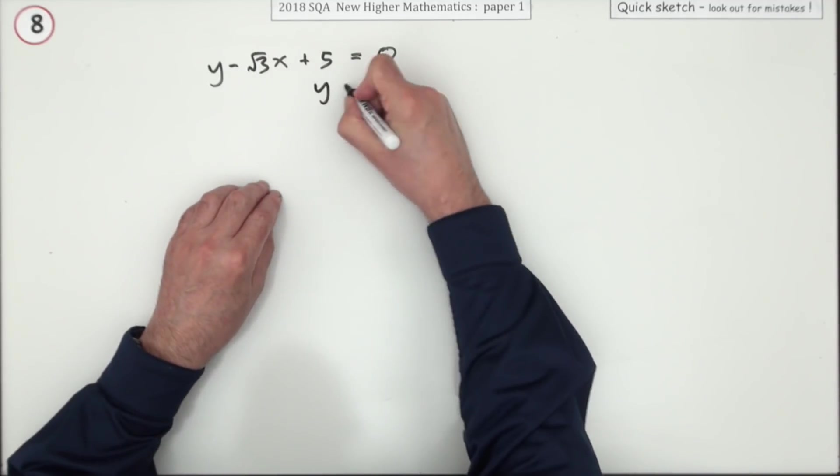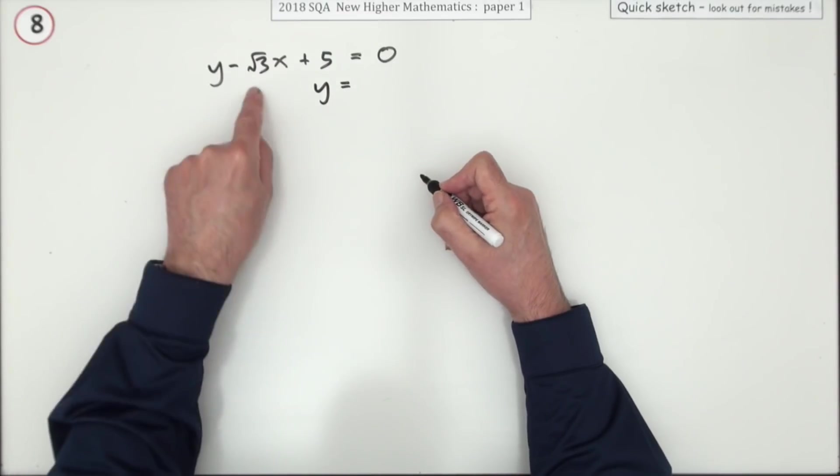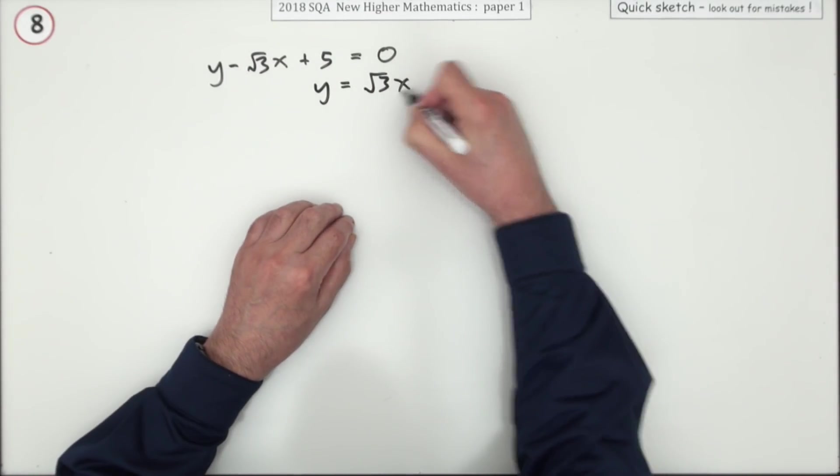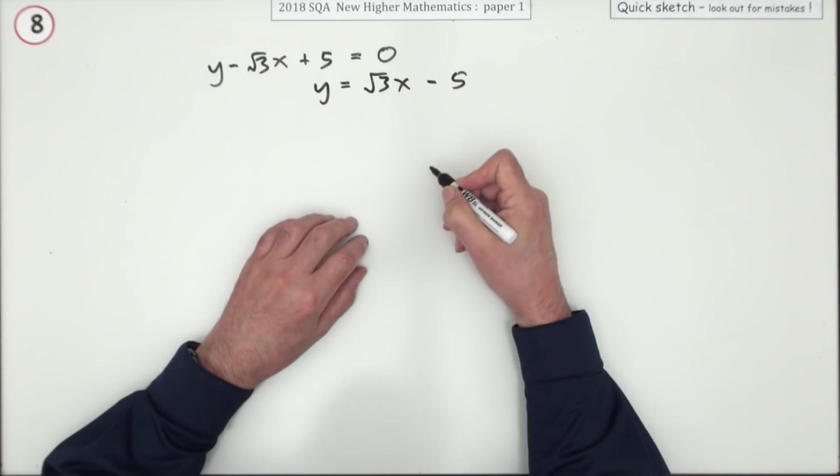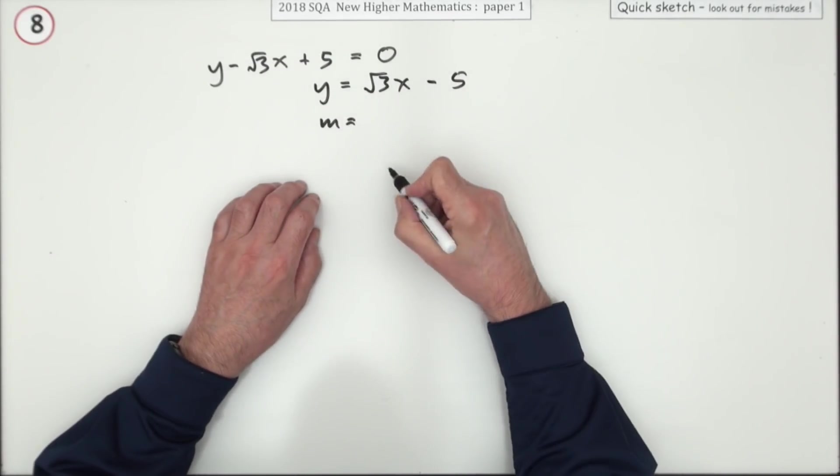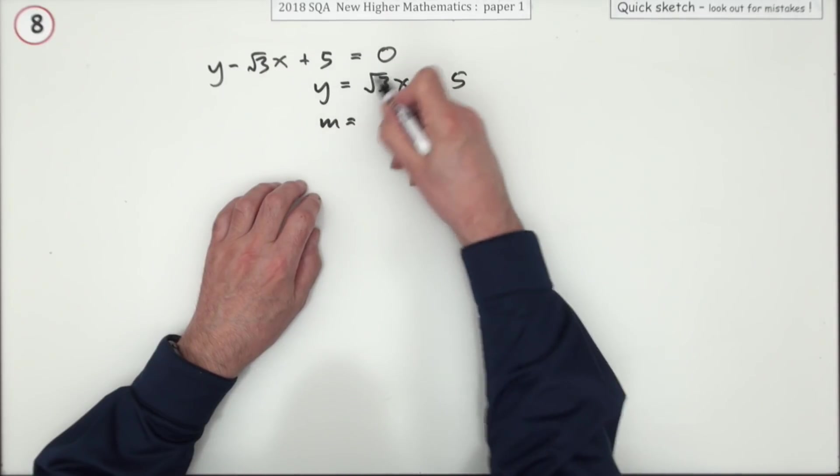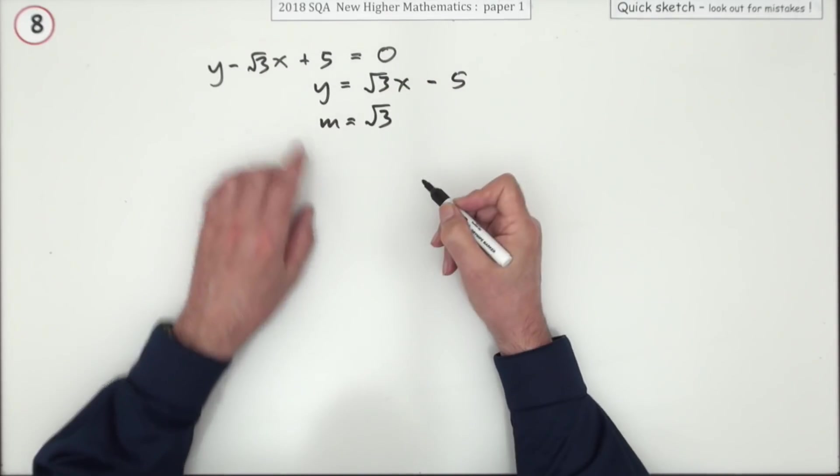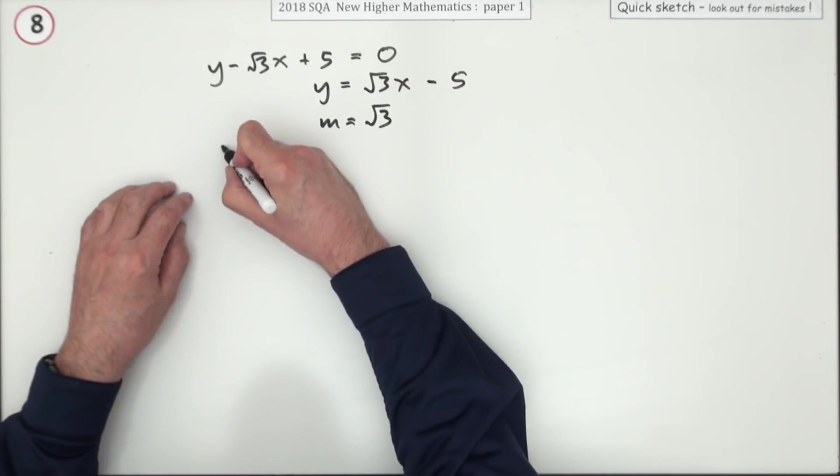Well, rearrange it into the form y equals mx plus c. So bring that over as a positive √3x that comes across as a minus 5. That's of no interest to you because the main part here was to extract the gradient, which is the coefficient of x, which is √3. That'll be one mark.